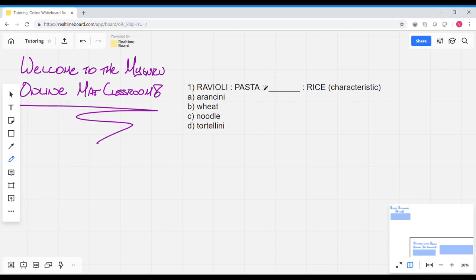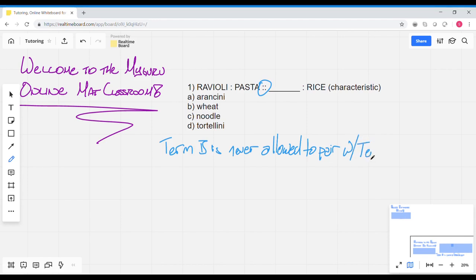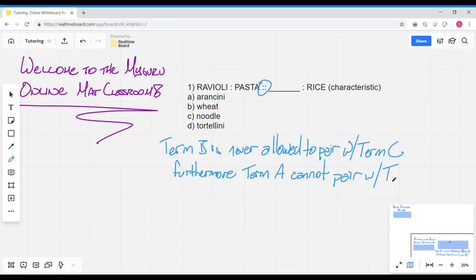So the idea of the pivot term is predicated on these two double dots between terms B and C, because what the double dots indicate is that term B is never allowed to pair with term C. And conversely, because term B can't go with term C, furthermore term A cannot pair with term D.